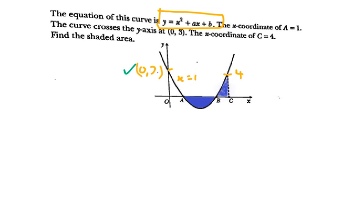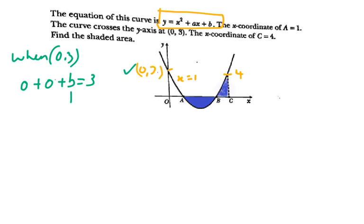By substituting the point (0, 3) in the equation, you get 0 squared plus a times 0 plus b equals 3. Hence, b is equivalent to 3. Getting this value earns you your very first mark.